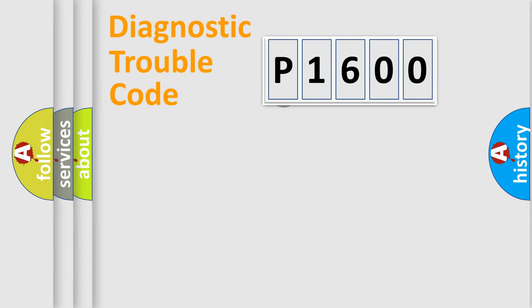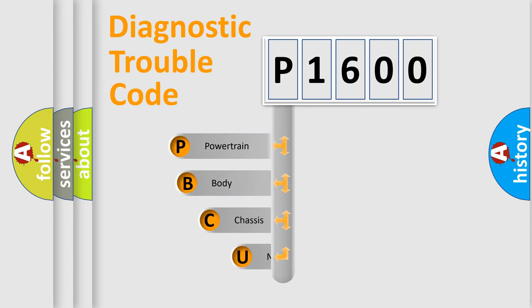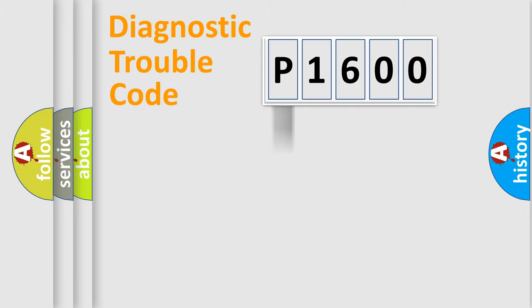First, let's look at the history of diagnostic fault code composition according to the OBD2 protocol, which is unified for all automakers since 2000. We divide the electric system of an automobile into four basic units: Powertrain, Body, Chassis, and Network. This distribution is defined in the first character of the code.